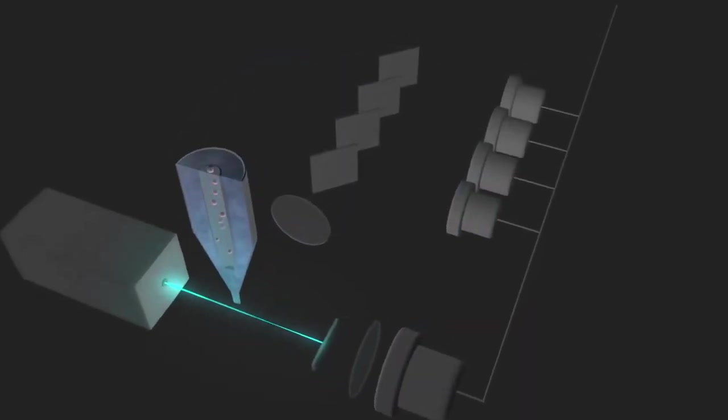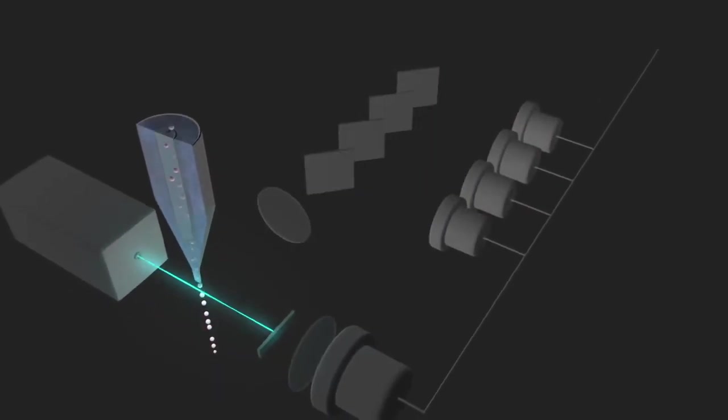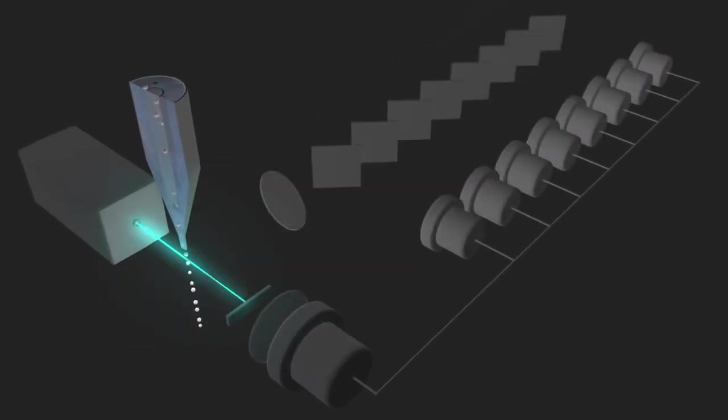While it is common for flow cytometers to detect two, three, or four colors at the same time, some flow cytometers can even detect up to 18 different colors at the same time.